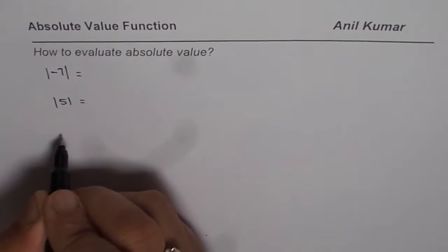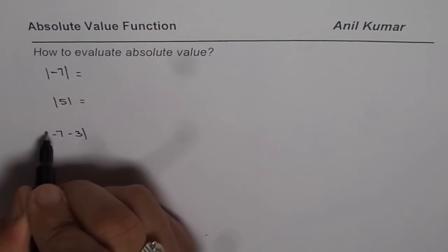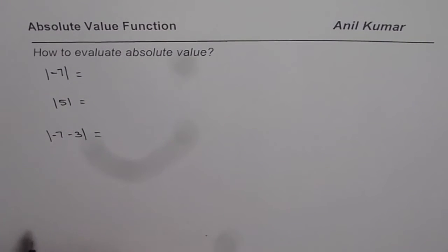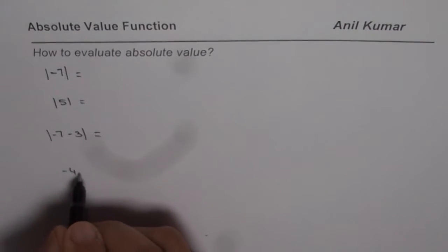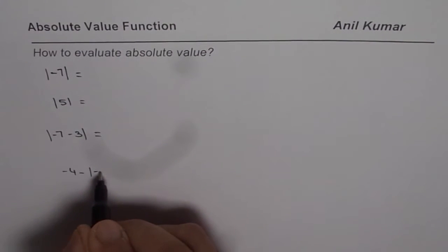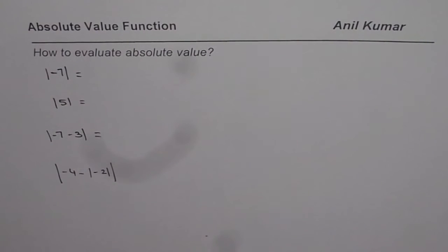What is absolute value of -7 minus 3 equals to, and let us also try to find absolute value of -4 minus absolute value of -2. So these are the examples which we will do and understand how to evaluate absolute value of a function.